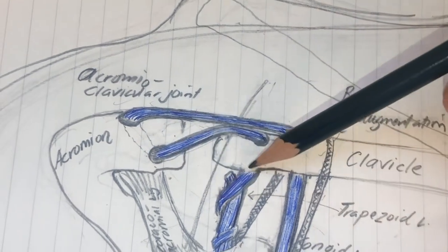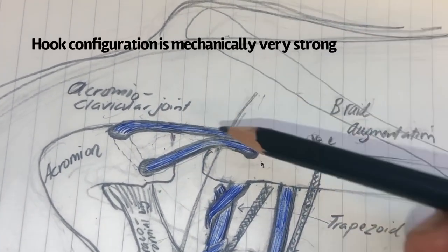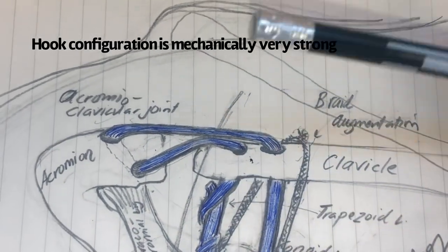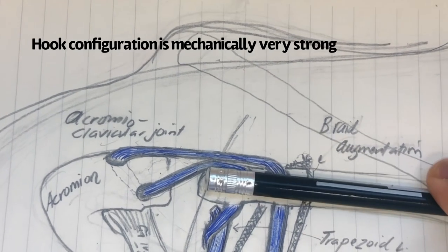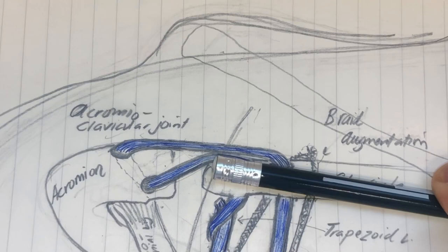And then instead of going under like this, I actually take the graft and go from above to below. And that way I have a nice hook type of configuration, which holds the clavicle down even further, very hard for the clavicle to push through that construct.